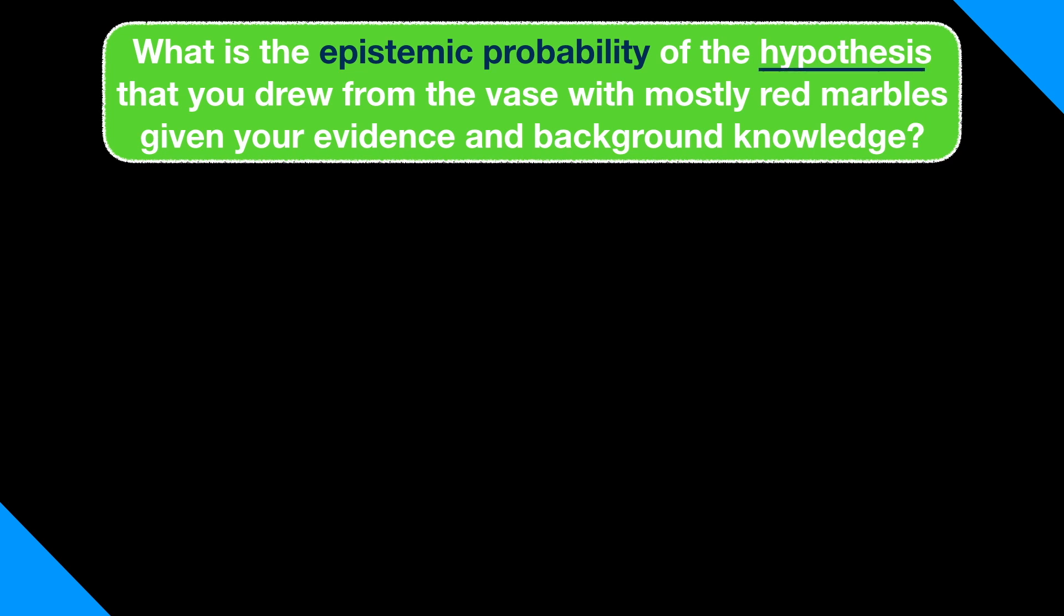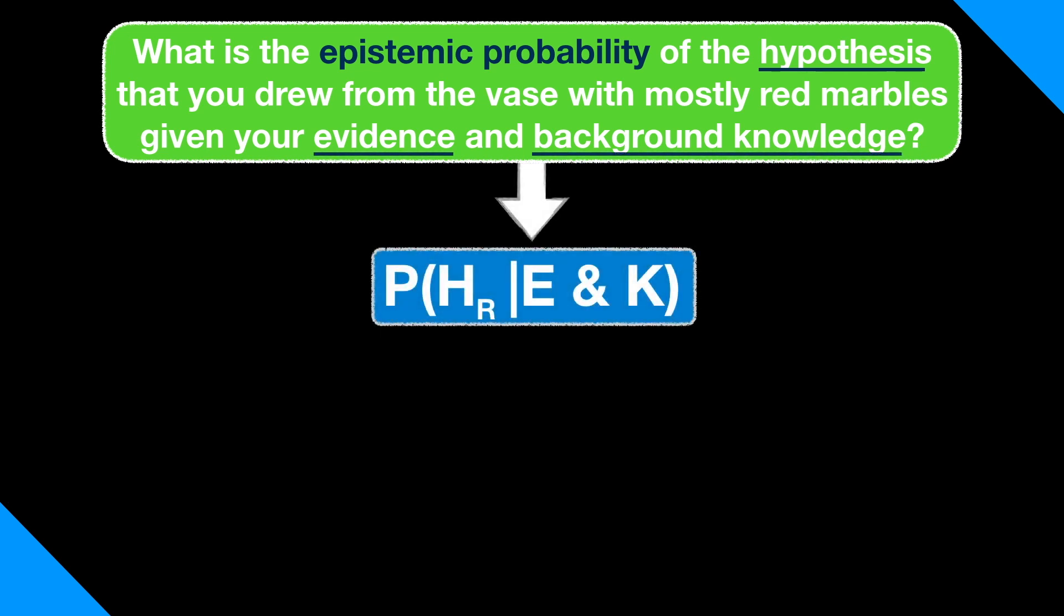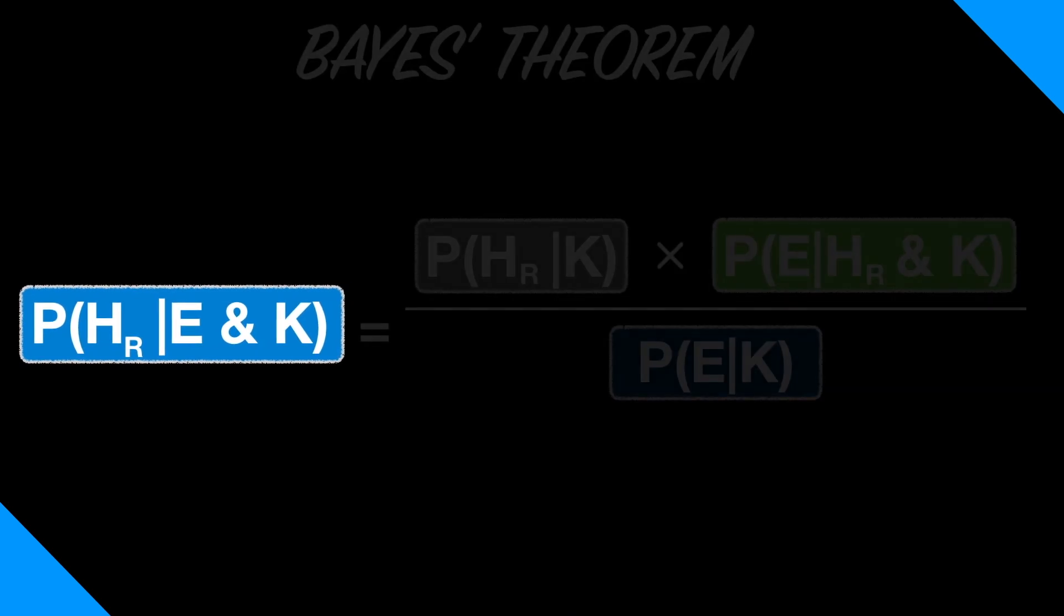Remember, the original question was, what's the epistemic probability of the hypothesis that you drew from the vase with mostly red marbles, given your evidence and background knowledge? We can symbolize that like this. This term is called your posterior probability. To find this answer, we can use a famous rule known as Bayes' Theorem, which relates the probability of the hypothesis given the evidence to the probability of the evidence given the hypothesis. We've already explored the meaning of these terms, but what about this one? The probability of the hypothesis given our background knowledge alone, apart from the evidence. This is called the prior probability of the hypothesis.